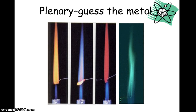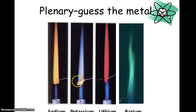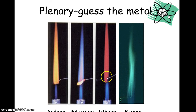Here are some flames — have a quick look at the colours and see if you can work out which metal ions are present. The answers are: the first one is yellow, so it's sodium; the second one is lilac, so it's potassium; the third one is crimson red, so it's lithium; and the fourth one is green, so it's barium.